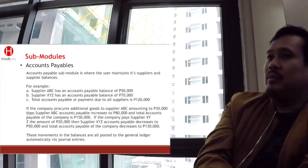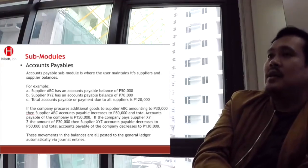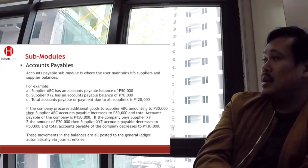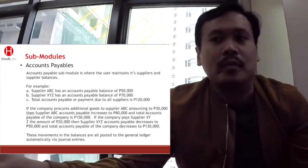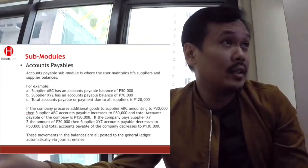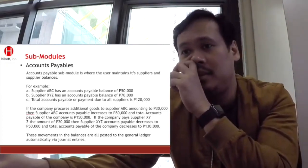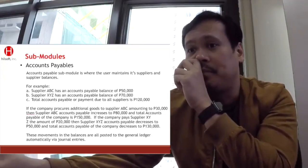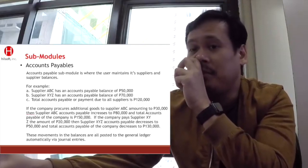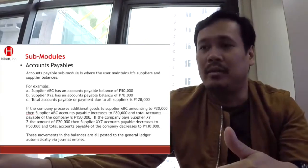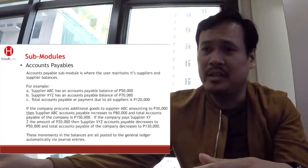These are applicable to companies whose suppliers have 30-day terms, 60-day terms, etc. For example, in your general ledger you have 120,000. The breakdown is: Supplier ABC has AP of 50,000 and XYZ has a payable of 70,000. If the company procures additional goods from ABC amounting to 30,000, then Supplier ABC's accounts payable increases to 80,000.